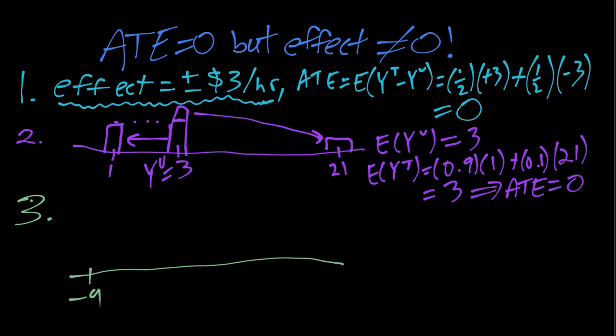...our untreated potential outcomes are either negative 9 or positive 9, each with one-half probability.